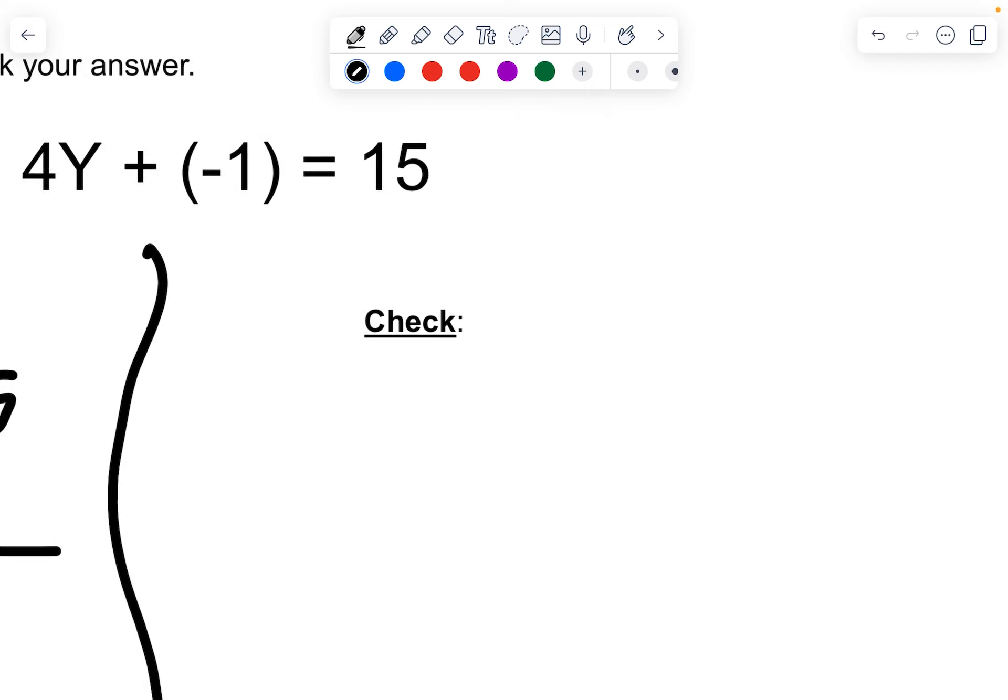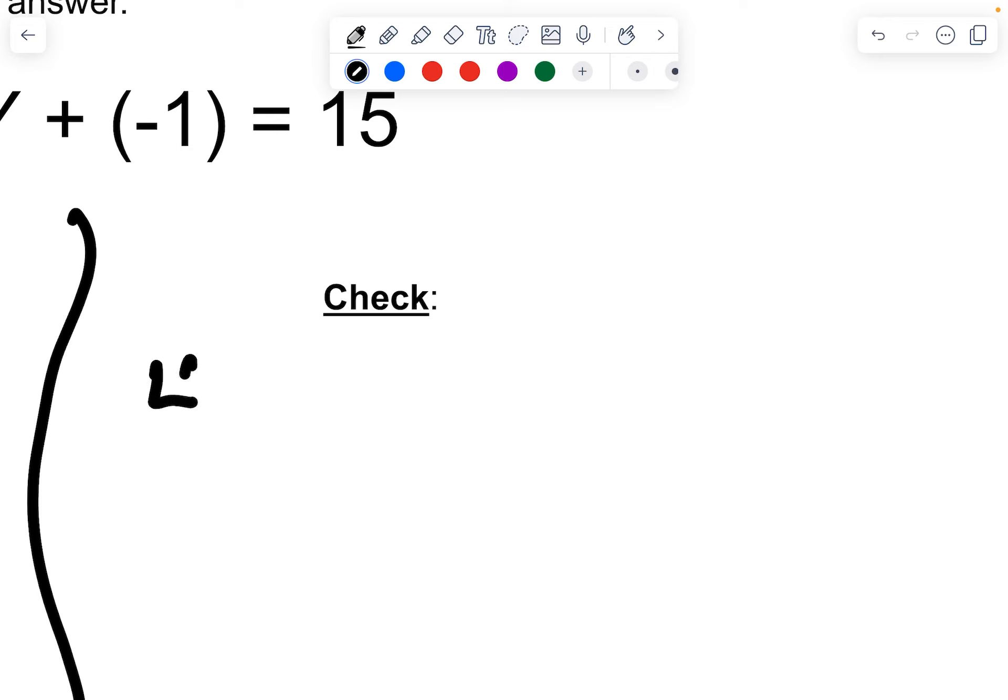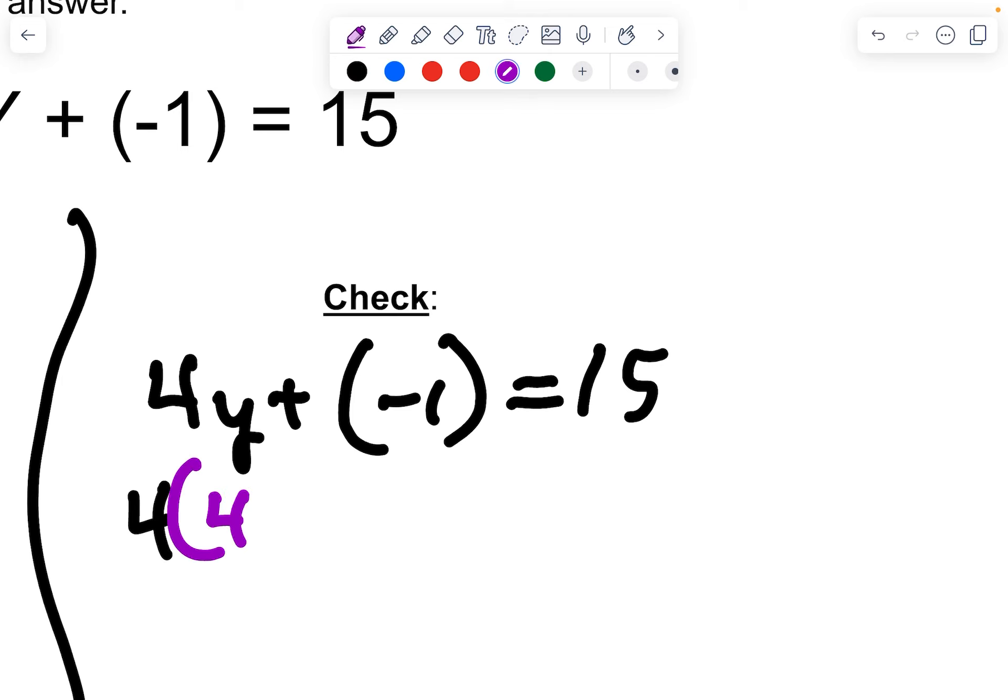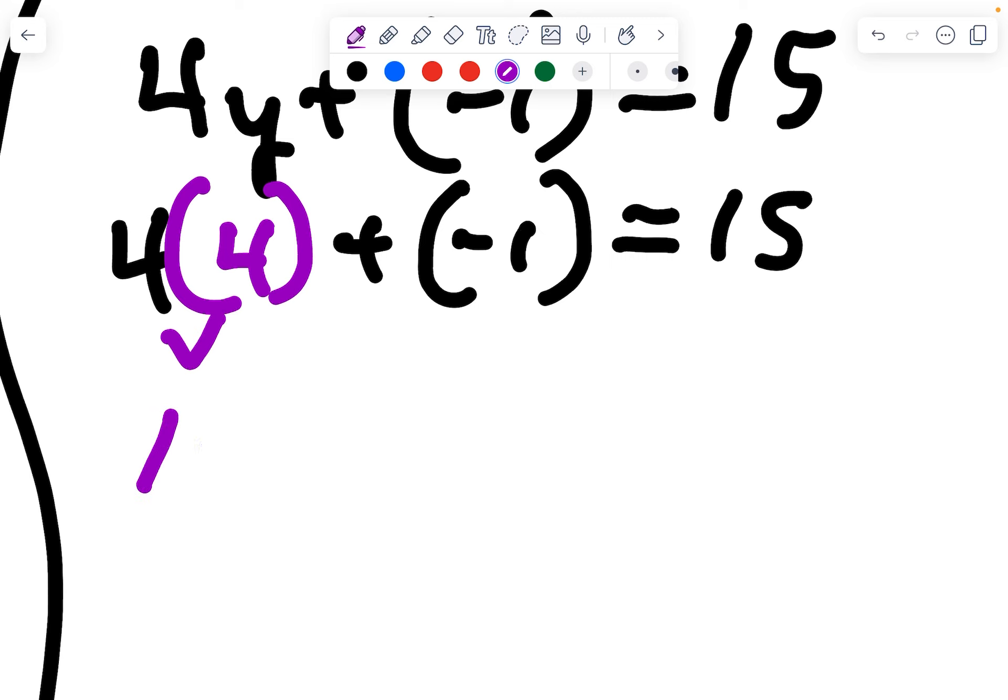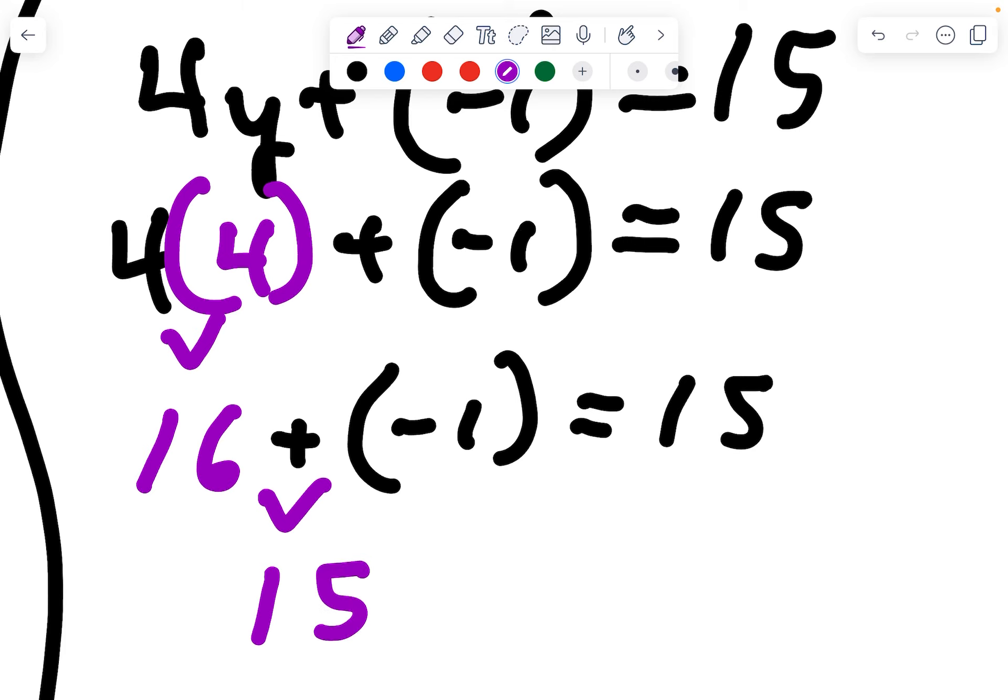Let's move on to the check. I've got 4y plus negative 1 equals 15. I'm going to take out my y. I'm going to do parentheses 4, just like what I've done before. And then 16 plus a negative 1 is 15.